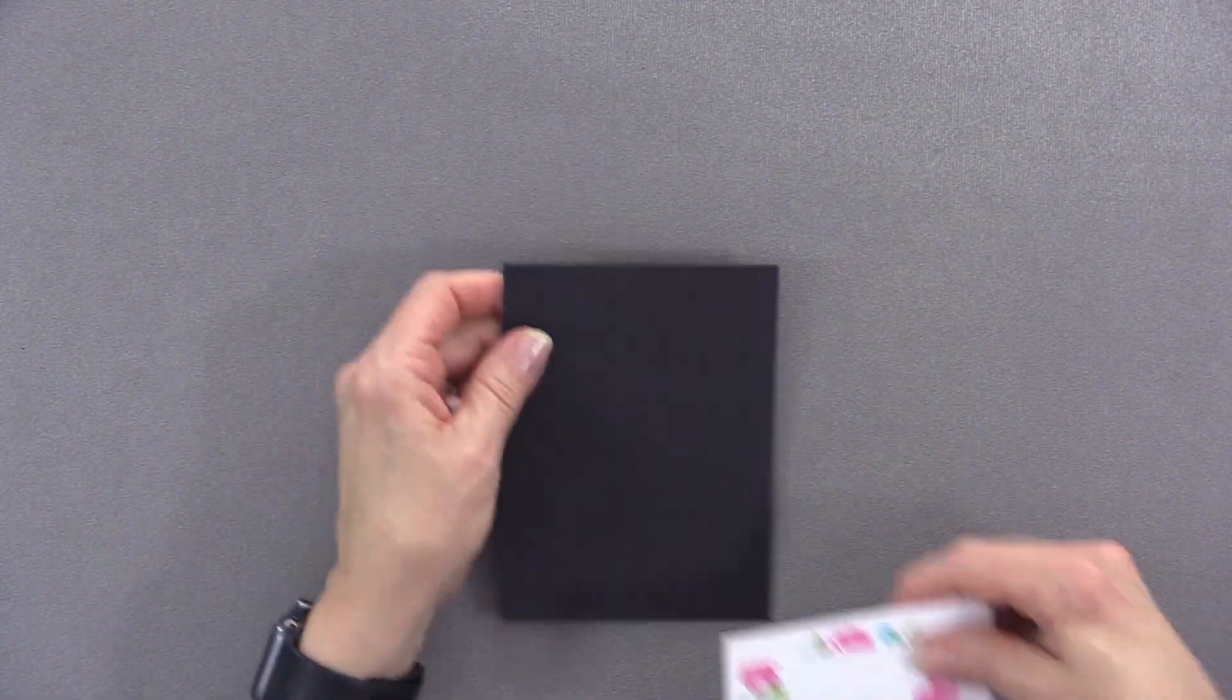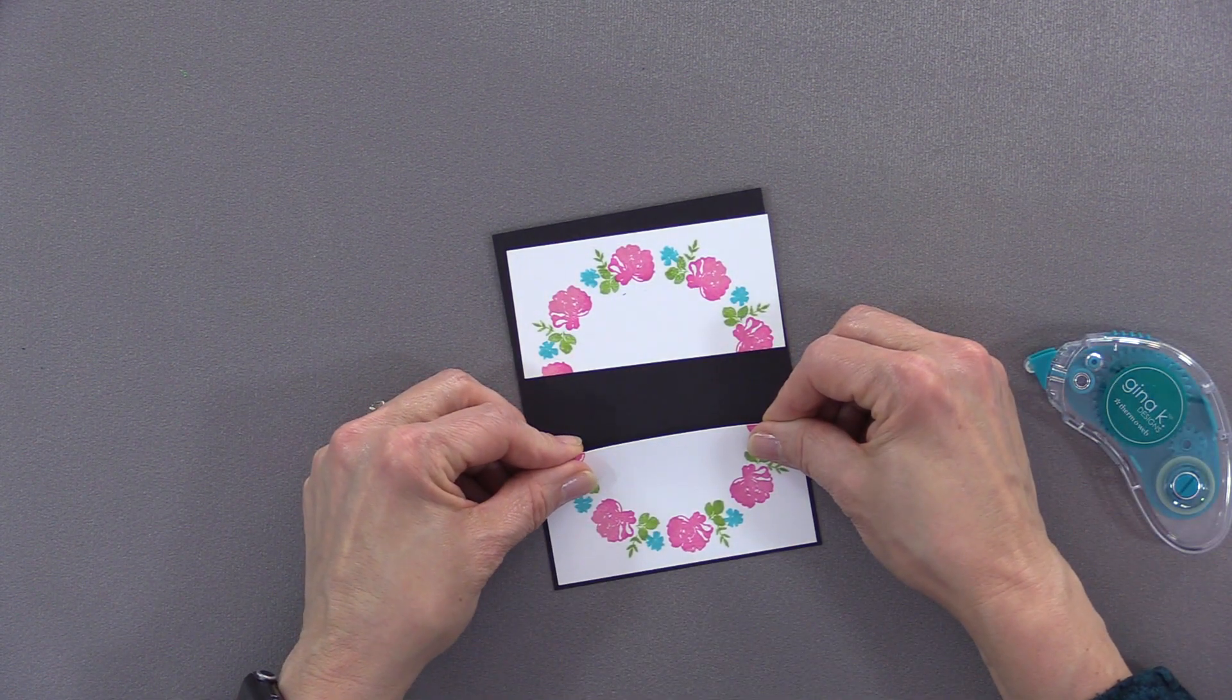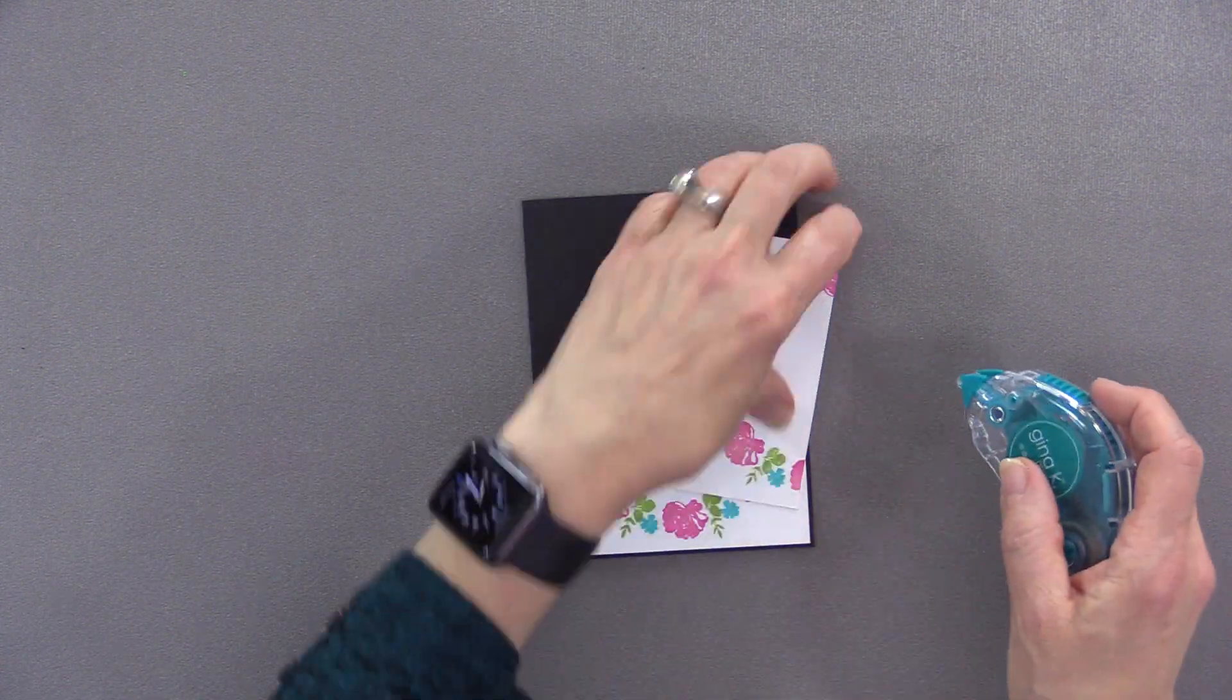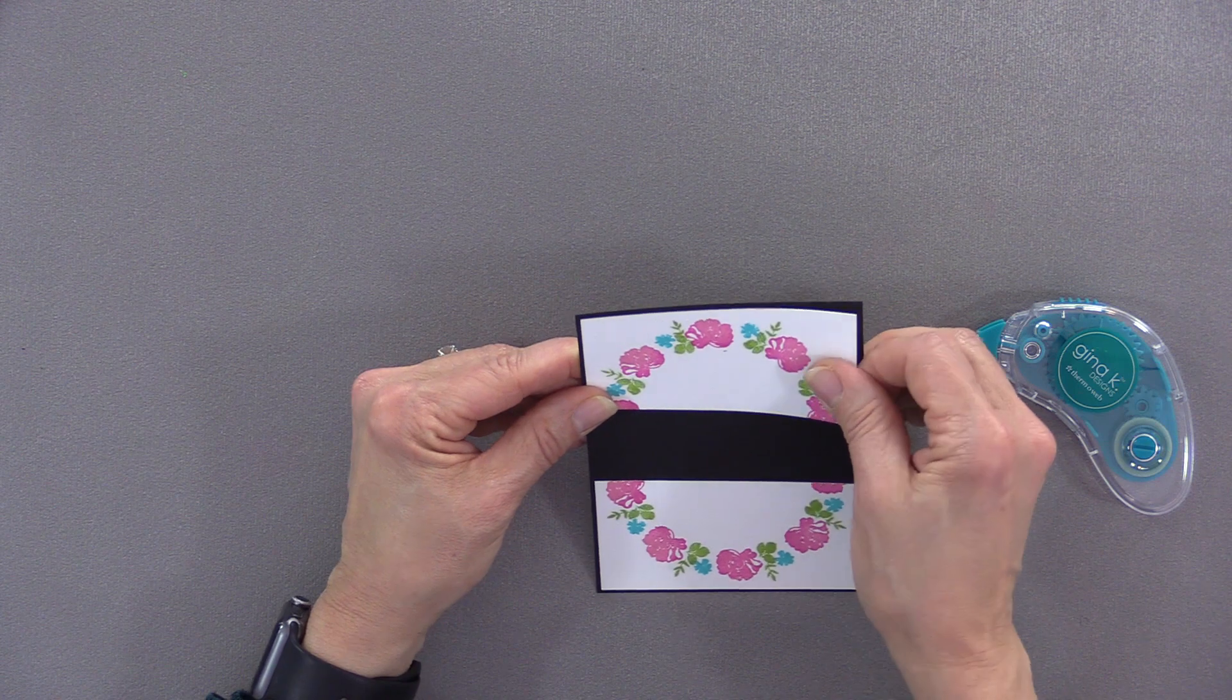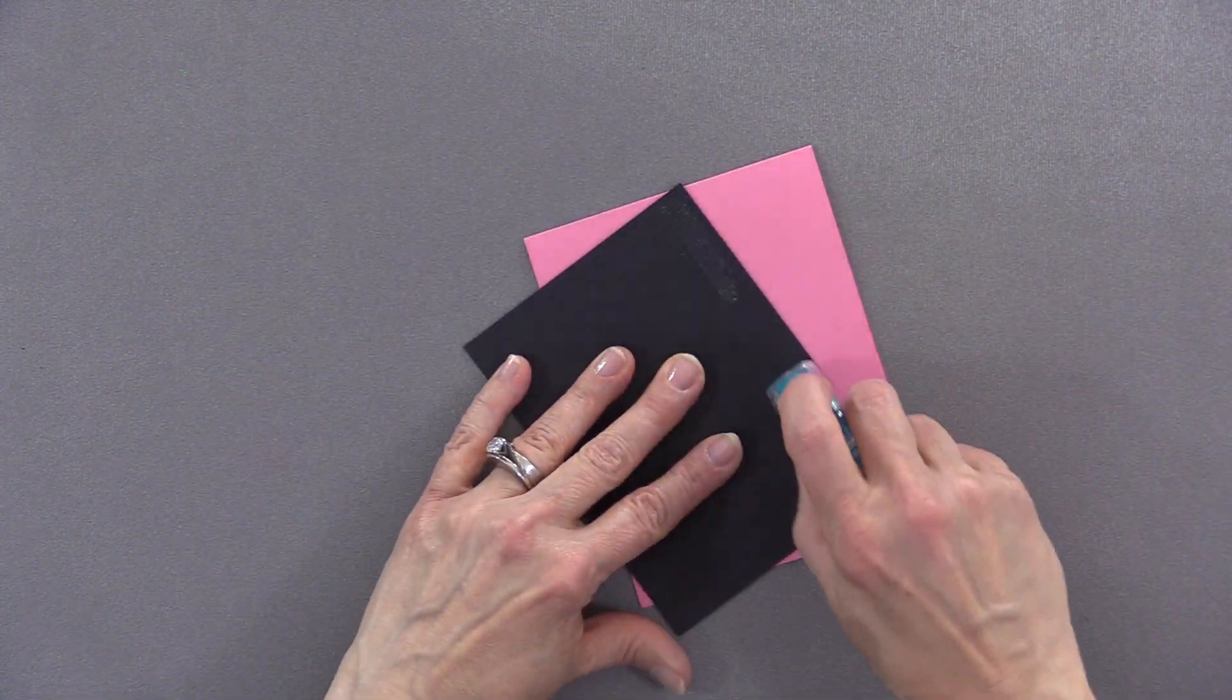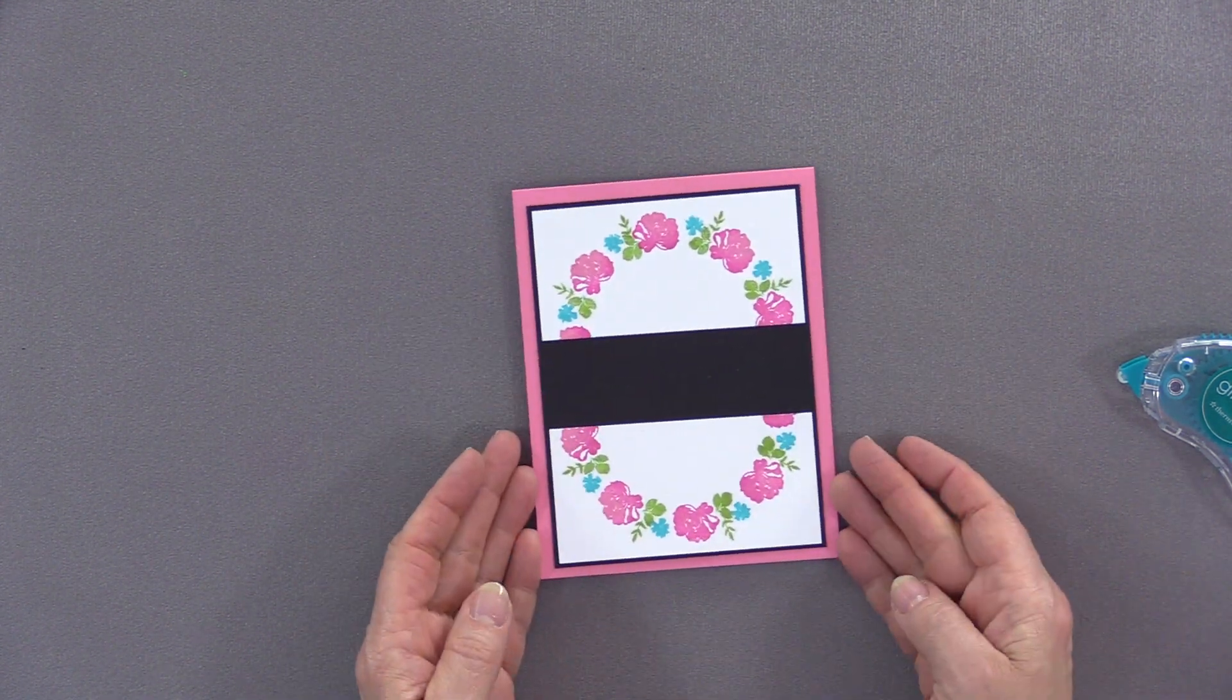For my next step, I'm going to mount this onto a piece of black cardstock, and I'm going to use some of the Gina K Designs Adhesive Dot Runner for this. When you do this, you want to make sure that you have somewhat of an even border around all three sides. And the same thing with this one at the top, an even border around all three sides. So now this whole panel is going to go on top of a dusty rose card base.